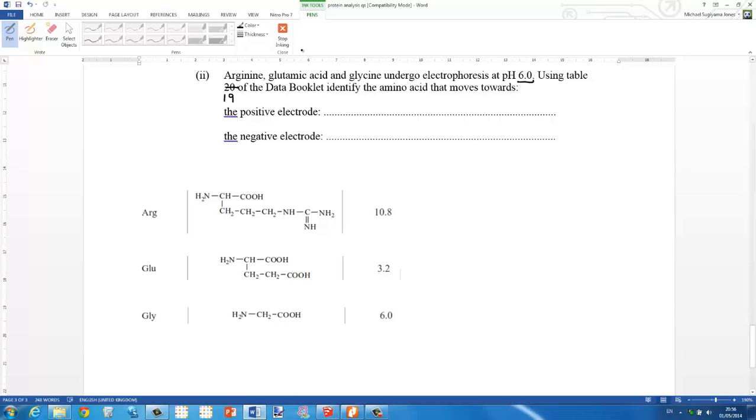For arginine, the pH of the buffer which is pH 6.0 is below the isoelectric point, because these are the isoelectric points here. For arginine it's 10.8.